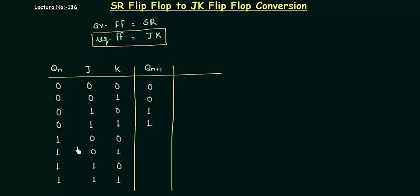When J is 0, K is 0, again memory, so 1. In this case 0, 1. And again toggle state, so QN plus 1 is 0, the complement of 1 is 0. So we are done with our step number 2, in which we have found out the characteristic table for our required flip-flop.